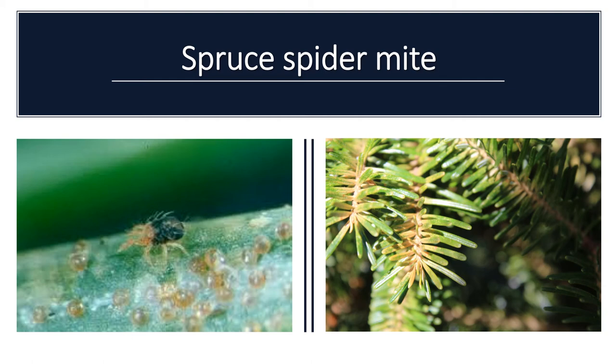The spruce spider mite can be the most troublesome of the mites in a Christmas tree plantation. Injury is most common during prolonged dry periods. These mites vary in color from dark green to brown and are less than 0.5 millimeters. They overwinter in the egg stage, tucked in around the scales and at the base of the needles, and will remain here until spring, when they hatch — usually before the new growth starts. Feeding will begin and continue throughout the summer, with multiple generations per year.